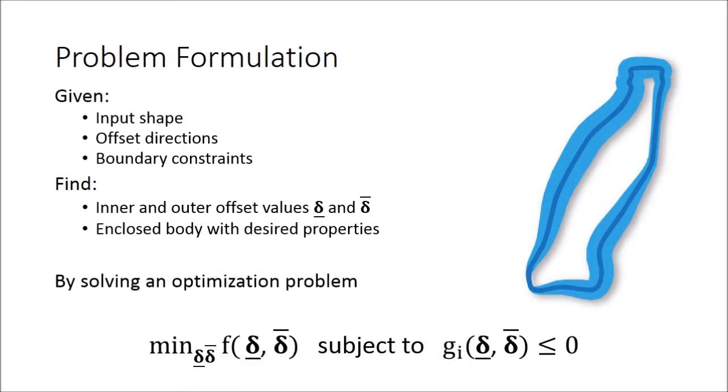We state it as an optimization problem where the solution is defined as a minimum of an objective function. We ensure certain additional properties, such as minimum wall thickness, by posing constraints.